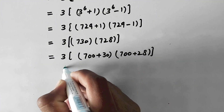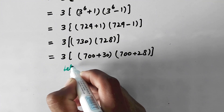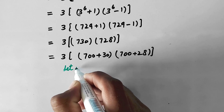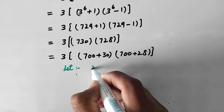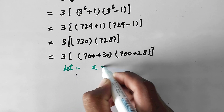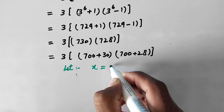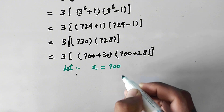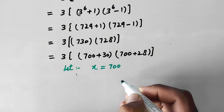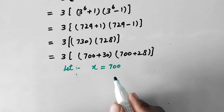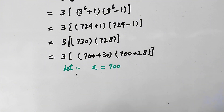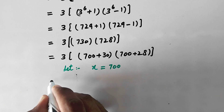To simplify the calculation, we let x equal to 700. By substituting the value of x, the expression becomes 3 into (700 plus 30) times (700 plus 28), which is 3 into (x plus 30) times (x plus 28).